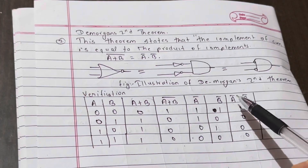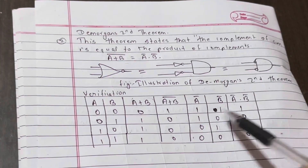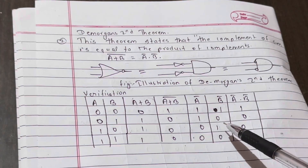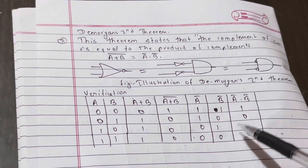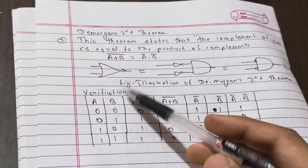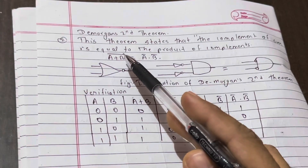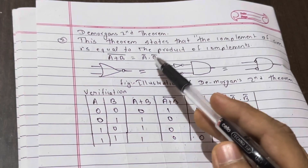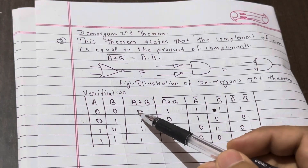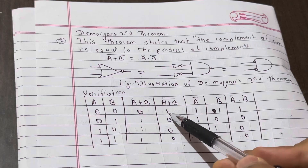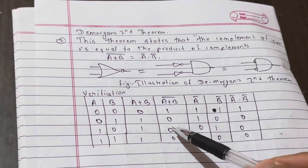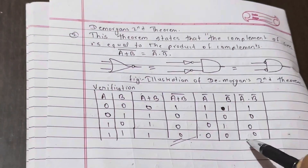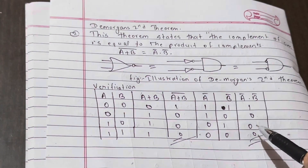We are going to verify: 1·1=1, 1·0=0, 0·1=0, 0·0=0. So the second statement is that (A+B) complement equals A complement · B complement, and the result matches the truth table, which proves the theorem.